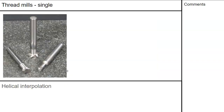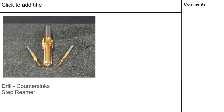Thread mills: this is a single-point thread mill. There are thread mills that have stacks of points — those are dedicated to a specific pitch. A single-point thread mill makes a helix and cuts the thread in a continuous path; it takes a little longer, but you can get a wide variety of threads out of one tool.